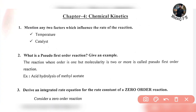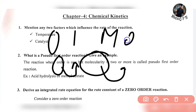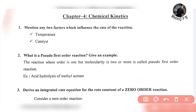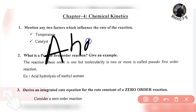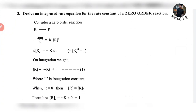Give an example — it's very simple. See, the reaction where the order is one but the molecularity is two or more is called a pseudo first order reaction. The reaction where order is one and molecularity is two or more is called a pseudo first order reaction. A good example is acid hydrolysis of methyl acetate.